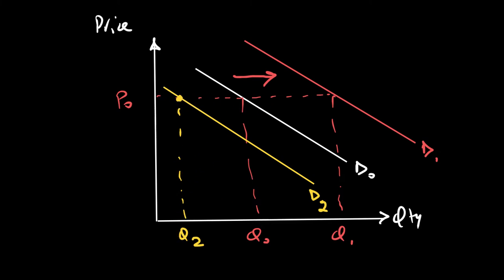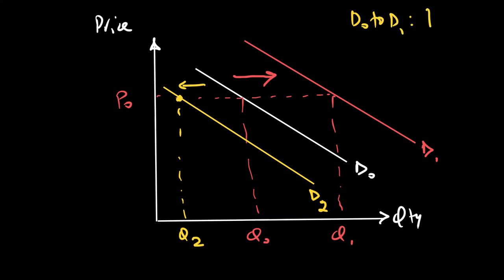One could argue that price is not the reason demand is changing, because for the same price, if somebody is buying more, it could be a non-price factor. Similarly, if for the same price P0 you are buying less, demand is decreasing. When you go from D0 to D1, we call it a rise or increase in demand. When we go from D0 to D2, we call it a fall in demand.